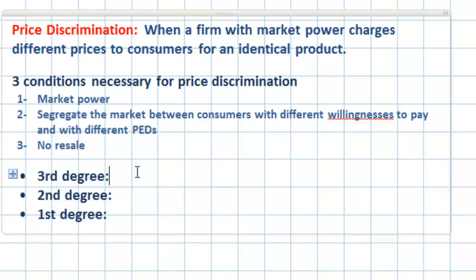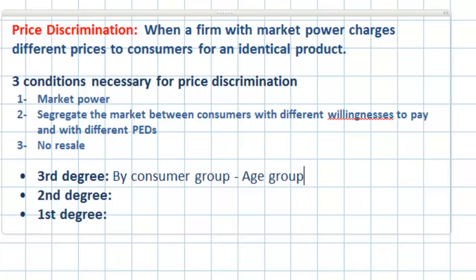Next we'll distinguish between the three different degrees of price discrimination. Starting with third-degree price discrimination: this occurs between consumer groups. A movie theater charging different prices to people of different age groups is one example. Another way firms may discriminate is by time of purchase — airlines charge higher fares to consumers who book at the last minute than to those who book weeks or months in advance.